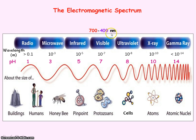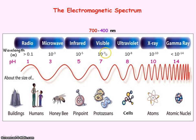You also need to know the range of visible light, which is from 700 to 400 nanometres. 700 nanometres represents the wavelength for red light and 400 nanometres represents the wavelength for violet light. Remember nano means 10 to the minus 9, so 700 times 10 to the minus 9 metres gives a wavelength of 7 times 10 to the minus 7 metres for red light, and 4 times 10 to the minus 7 metres for violet light.